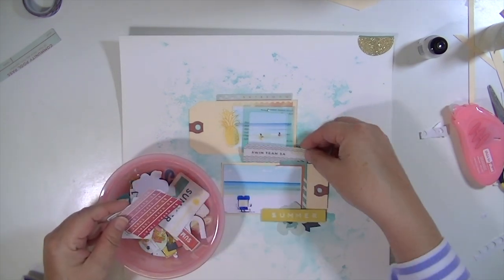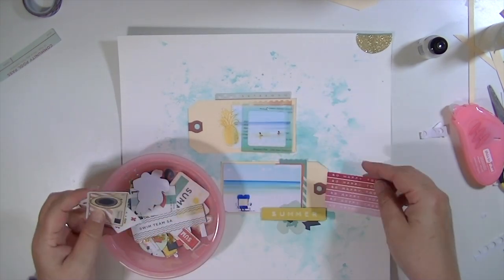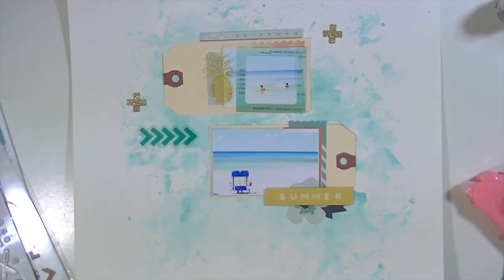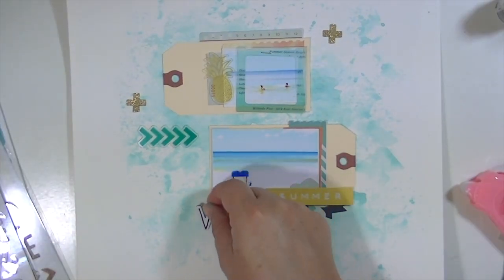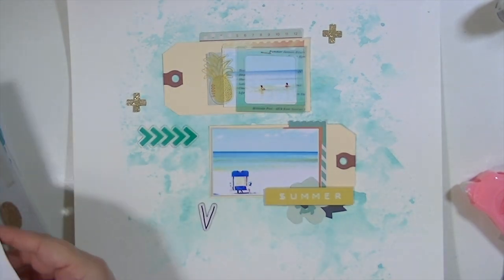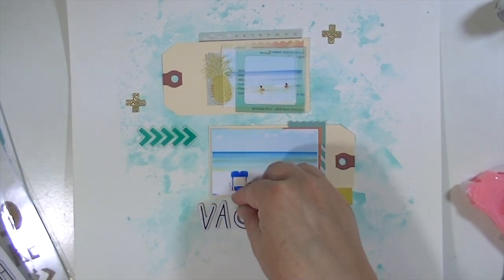I'm going to look through all of the ephemera from the Poolside collection, just kind of rifle through there and see if I can find anything else I want to use. I ended up finding that little piece of acetate and the two little gold glitter plus signs or crosses.